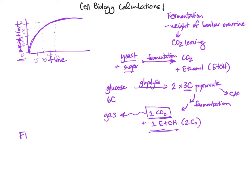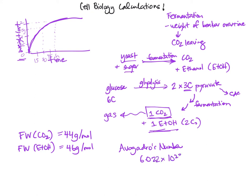First, let's consider that the formula weight of CO2 is 44 grams per mole. We can also note that the formula weight of ethanol is 46 grams per mole. Last thing I want to remind you about is Avogadro's number. That is the number of molecules per mole, and we're going to use that as a constant here.